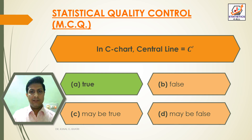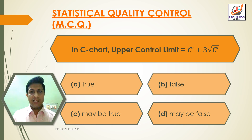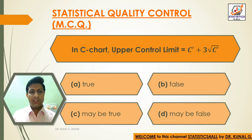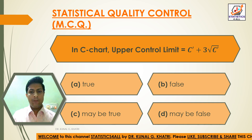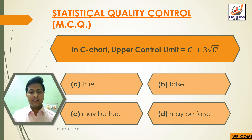Next question: in C chart, upper control limit is equal to C dash plus 3 root C dash. Option A: true, Option B: false, Option C: may be true, Option D: may be false. Answer: Option A — true. In C chart, upper control limit is equal to C dash plus 3 root C dash.